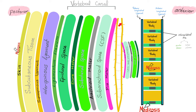The pia mater hugs the spinal cord. Going around, it's like a circle: pia, subarachnoid, arachnoid, subdural, dura. Continuing anteriorly, you then hit the posterior longitudinal ligament, then the vertebral body. Between adjacent vertebral bodies sits the intervertebral disc — outer annulus fibrosus and central nucleus pulposus — and anteriorly the anterior longitudinal ligament.